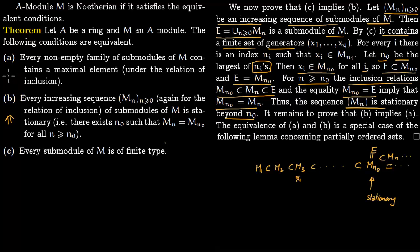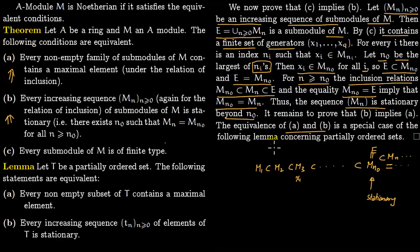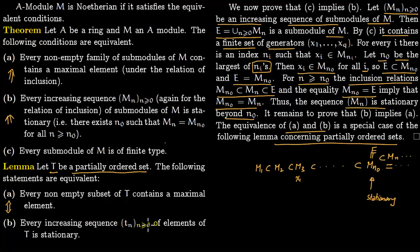Now we prove B implies A. The equivalence of A and B is a special case of a lemma about partially ordered sets. The lemma states: let T be a poset; then the following two statements are equivalent — A: every non-empty subset of T contains a maximal element, and B: every increasing sequence of elements of T is stationary.